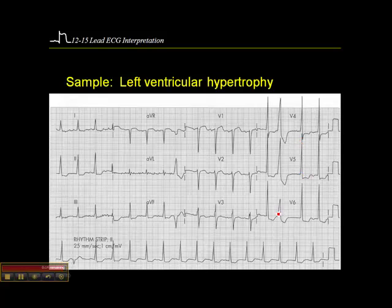On most transport monitors, the height of the QRS gets cut off by the printer. We may not actually see the full height of the QRS. If it goes right to the top and squares off, we might be dealing with hypertrophy.